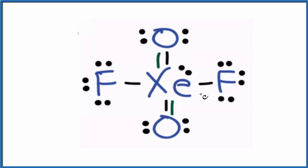So this is the Lewis structure for XeO2F2. You'll note that all the atoms have an octet, except for the central xenon. That has more than 8, but that's okay. Xenon can have an expanded octet. So this is our Lewis structure.